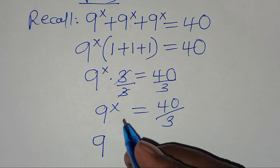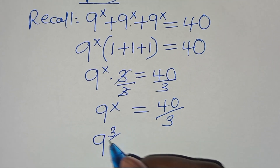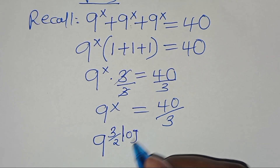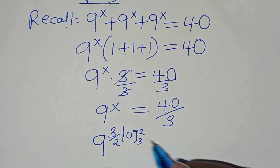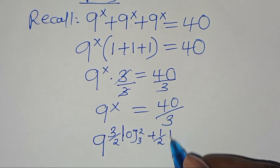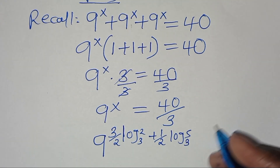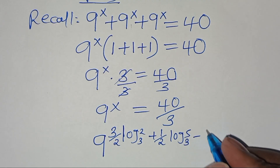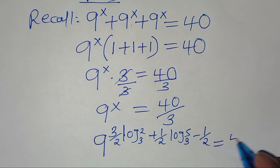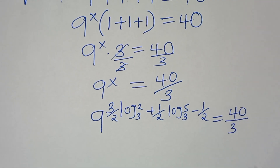Substituting the value of x, we have 9 to the power of 3 over 2 times log₃ 2, plus one half times log₃ 5, minus one half. This is supposed to give us a value of 40 over 3.